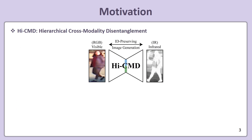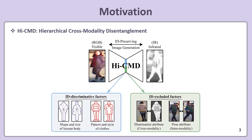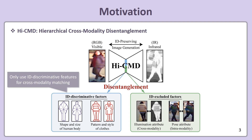To deal with this problem, we propose a novel high CMD method. It is an efficient learning structure to hierarchically disentangle ID-discriminated factors and ID-excluded factors from a pair of cross-modality images. We only use the ID-discriminated features for re-ID tests.